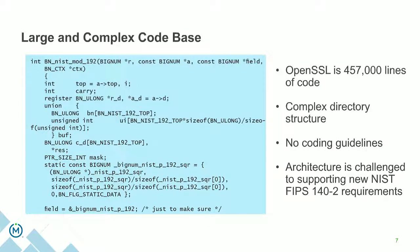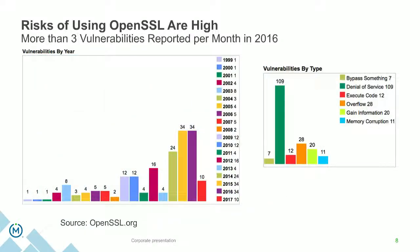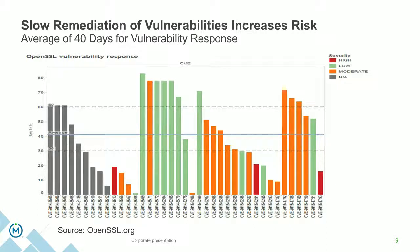OpenSSL, for example, has nearly half a million lines of code. It's complex. There are no real coding guidelines. And especially now, from a compliance standpoint, it's being challenged to meet various evolving standards such as FIPS. The vulnerabilities are fairly high — up to three a month in some years with OpenSSL. Every month there are three patches you need to deal with. According to OpenSSL, it takes about 40 days from when a vulnerability is identified to addressing it — typically meaning publishing a patch — at which point end users need to go out and patch all of their systems.